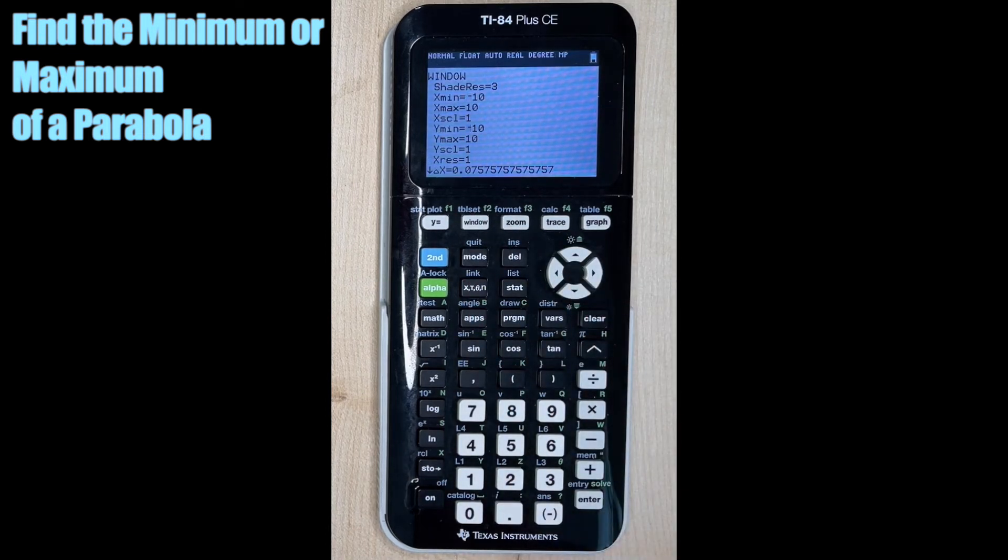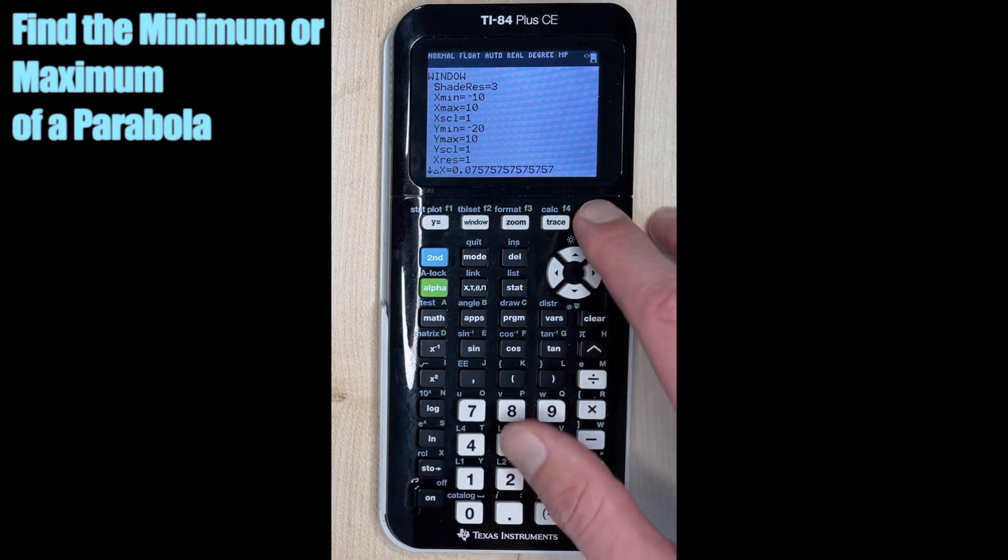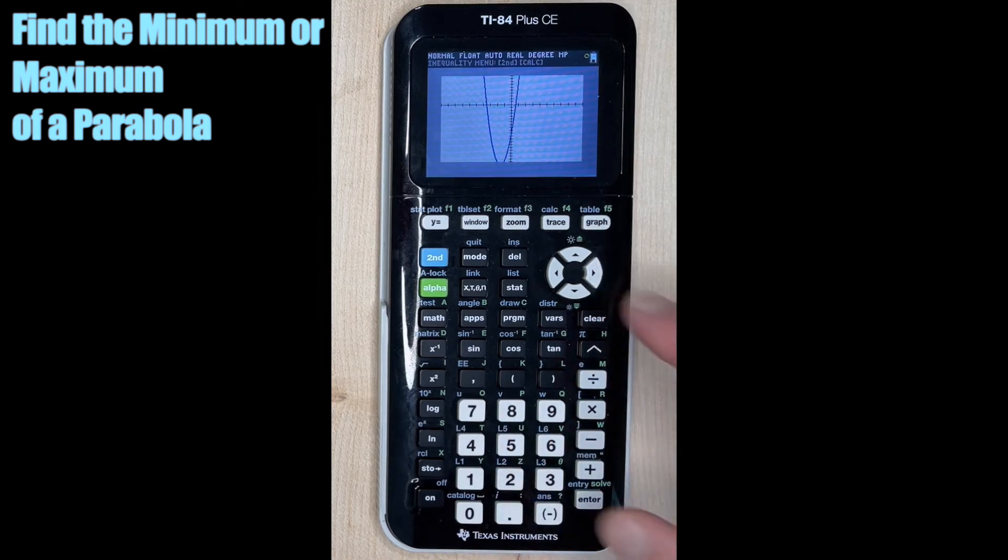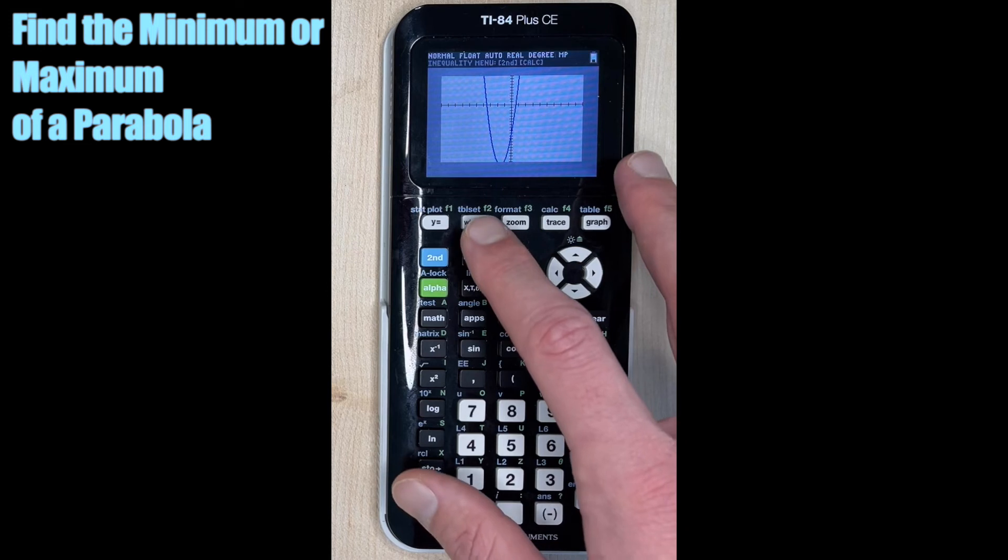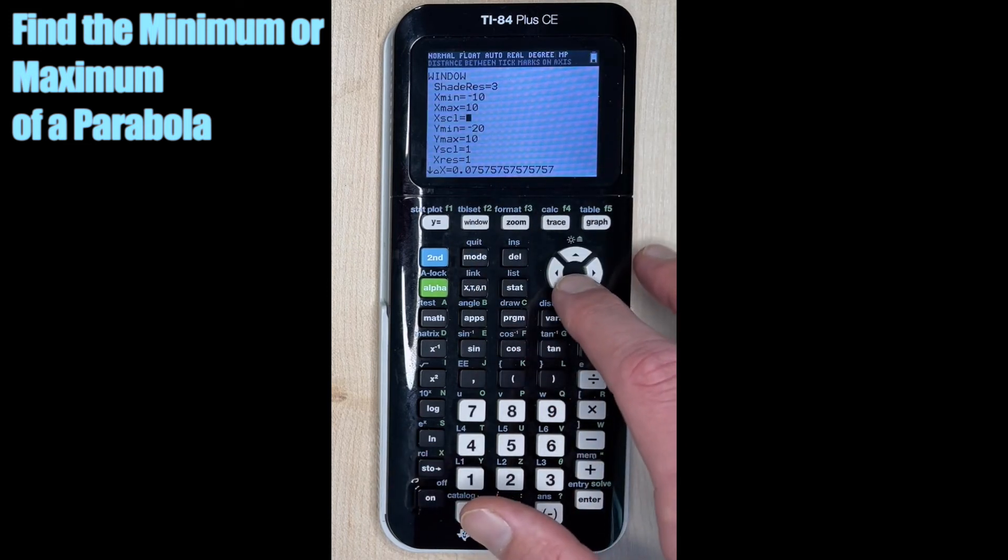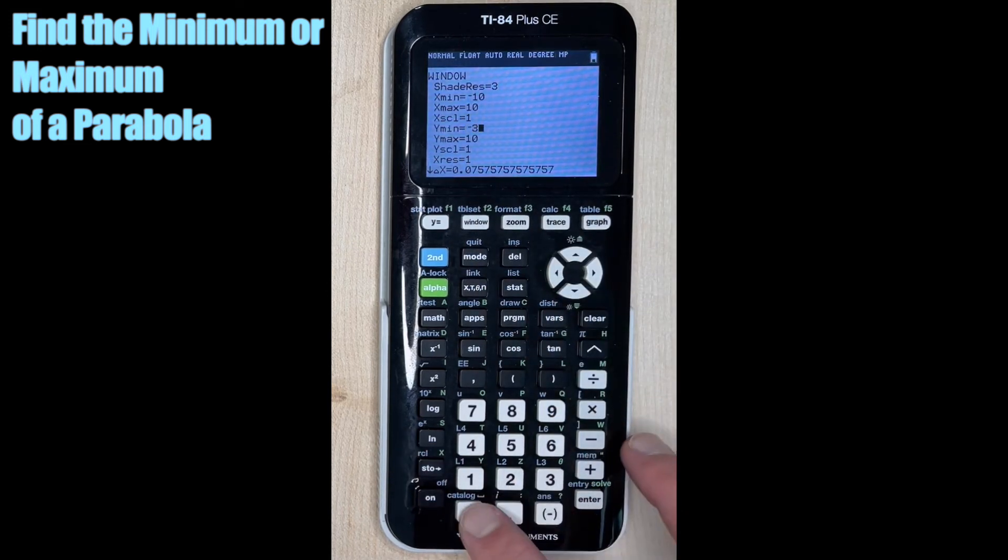And we really can't see it, right? So let's go back to window. Let's go down to y min and let's do negative 30. Hit graph.